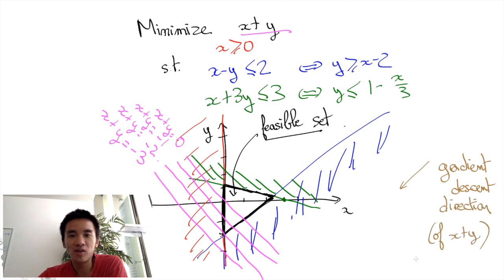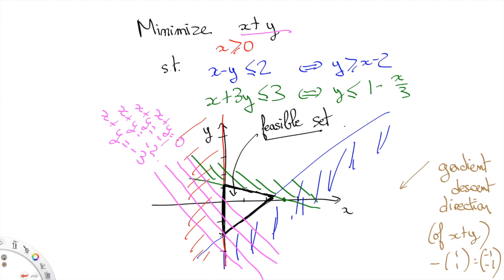More precisely, the gradient of the objective function is 1,1, because these are the coefficients in front of x and y in the objective function. Since we have a minimization problem, the direction towards which we want to tend is actually the negative of the gradient, i.e. the direction minus 1, minus 1. We can now easily see what the minimizer of the linear program is. It is the bottom left point of the set of feasible solutions, i.e. of the triangle. This minimizer is evidently the point 0, minus 2.